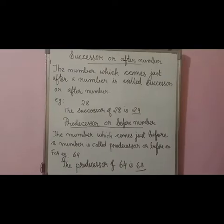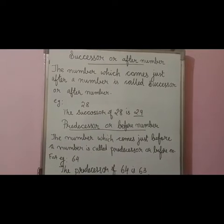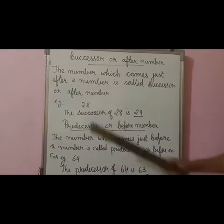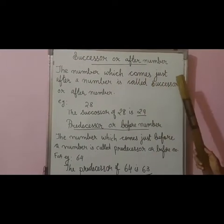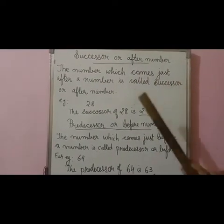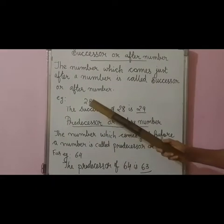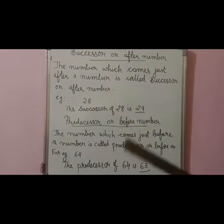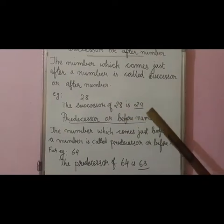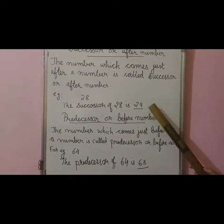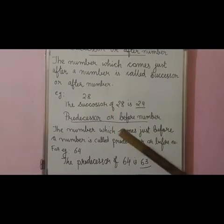Now we are going to learn about successor, or after number. What is successor? The number which comes just after a number is called successor or after number. Here I have given an example. I have written 28. What is the successor of 28? It is 29. Why? Because 29 is coming just after 28.